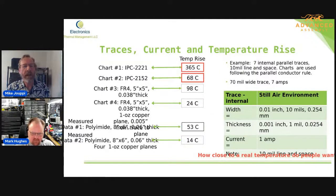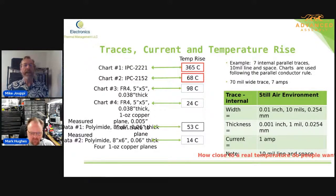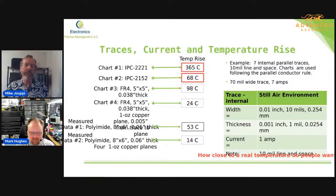Now one thing: it's a 0.06-inch thick board, and the board's a little bit smaller than the IPC-2152 standard. The 2152 board is 14 inches long, 7 inches high, and 0.07 inches thick. This one is 8 inches by 6 inches, and 0.060 inches thick. So the thinner board's going to run a little hotter, but probably not all that much. The majority of the difference in temperature — that's 68 to 53 degrees C — most of that is probably due to the 10-mil spacing.